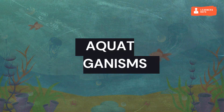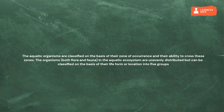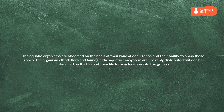The Aquatic Organisms. The aquatic organisms are classified on the basis of their zone of occurrence and their ability to cross these zones. The organisms, both flora and fauna, in the aquatic ecosystem are unevenly distributed but can be classified on the basis of their life form or location into 5 groups.